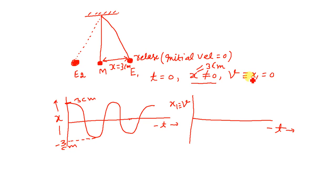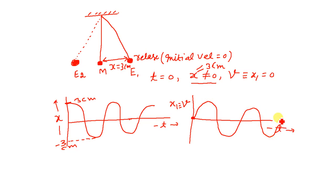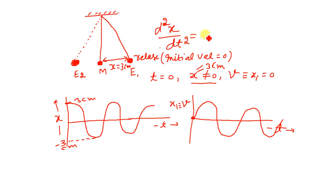As the particle executing SHM moves toward the mean position, its kinetic energy will increase, so the velocity graph will go up then come down and go up and come down, and so on. Negative velocity means the direction of motion has changed. Looking at the acceleration graph, the equation of SHM is d²x/dt² equals minus ω²x.